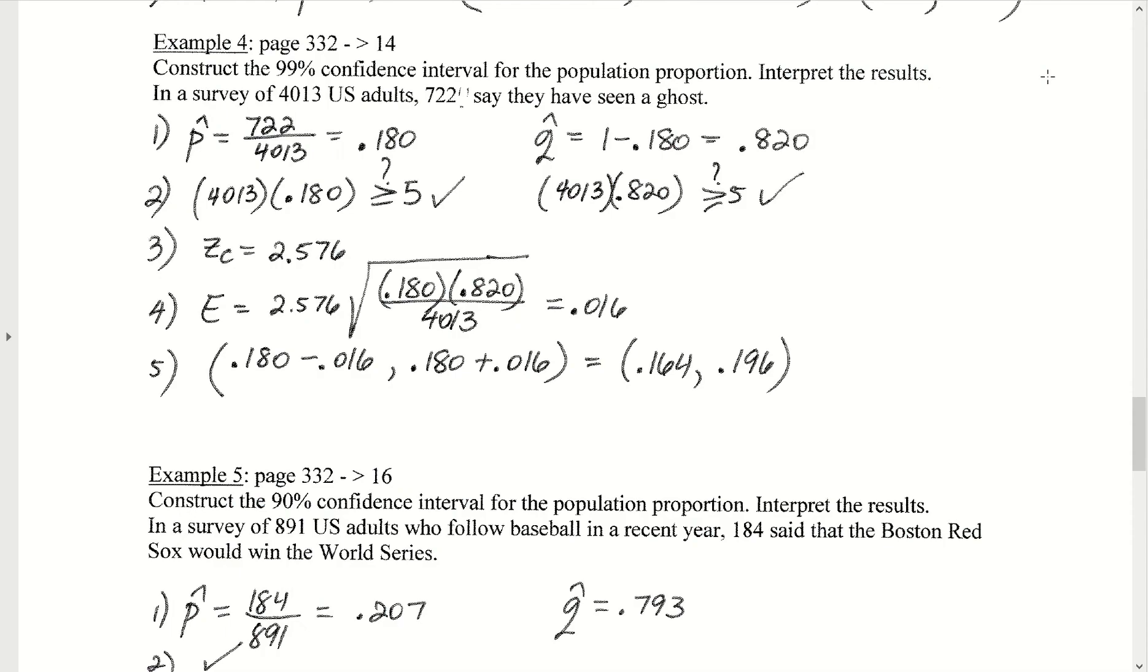Let's take a look at example 4 from section 6.3. This time they want us to construct the 99% confidence interval for the population proportion and to interpret the results. In a survey of 4,013 U.S. adults, 722 of them say that they have seen a ghost.